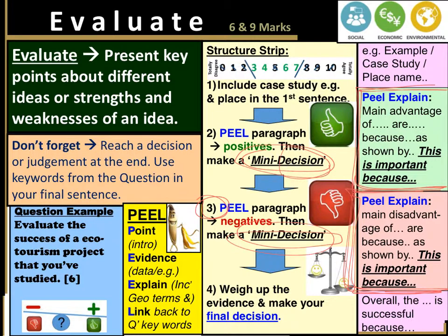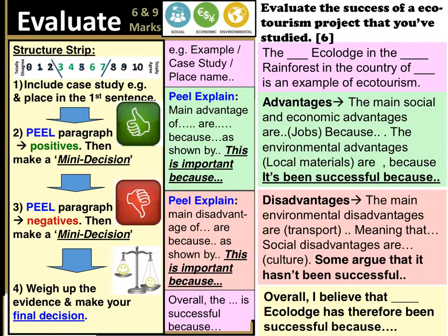We're going to move the left-hand side of this slide over to give us space on the right for a sample answer. On the left-hand side you've got the structure strip: your first, second, third, and fourth sentences that you're going to write about — your positives, your negatives. Down the middle there are some words to help you. On the right-hand side you've got an example answer. Have a go to see if you know what goes in the lines, or just pause and wait for the answers in a moment.